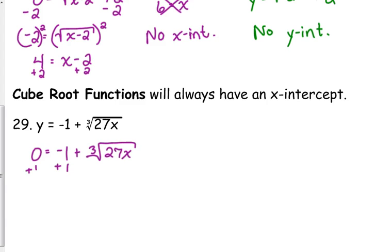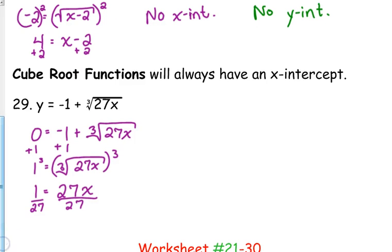Add 1. Get rid of the cube root by cubing both sides. 27x. And then divide both sides by 27. So it's a little weird, but 1 over 27, 0, is our x-intercept. Remember, we want to list those as points. The y-coordinate is always 0 for the x-intercept. And I do want it there in fractional form.